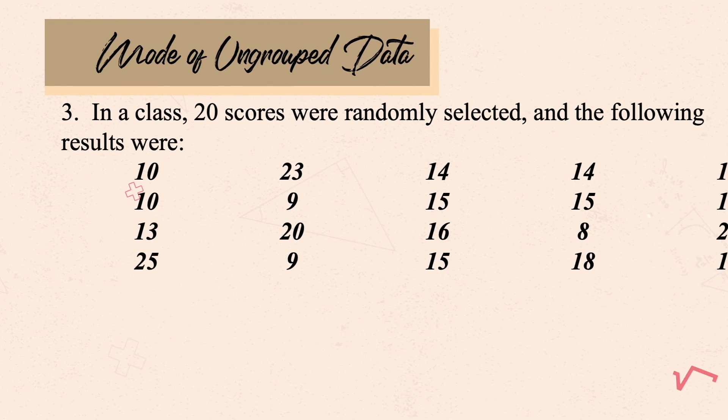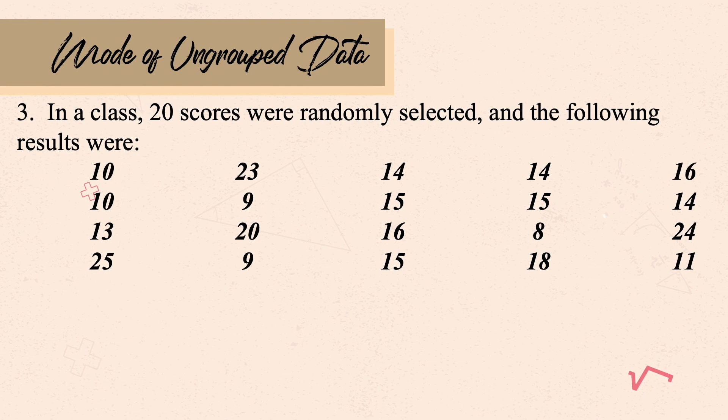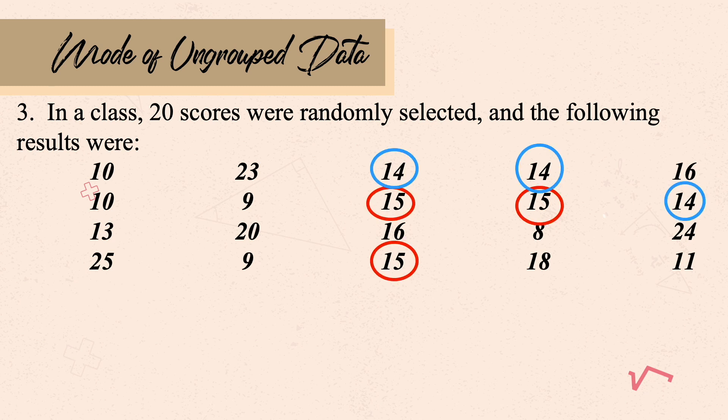Another example: in a class, 20 scores were randomly selected. Looking at the data, the modes are 14 and 15.